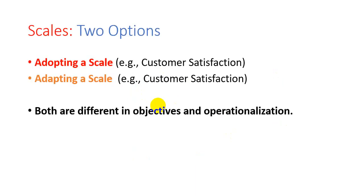An organizational researcher has two options available when searching for a scale for a variable: either they can adopt a scale or they can adapt a scale. In this video we'll be using customer satisfaction as our example variable throughout. Whether we adopt or adapt a scale largely depends on the objective of our research and the type of operationalization of a variable available to us.